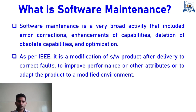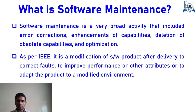If we see the standard definition of software maintenance, then as per IEEE, it is a modification of a software product after delivery to correct faults, to improve performance or other attributes, or to adapt the product to a modified environment. Software maintenance phase is definitely needed over a period of time once software is delivered successfully.